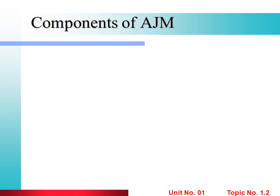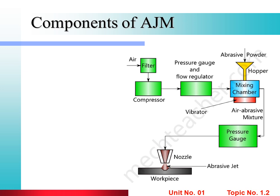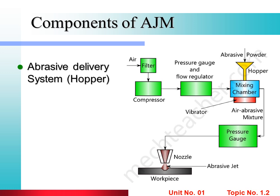Components of Abrasive Jet Machining: As shown in the figure, there are various components. The first component is the Abrasive Delivery System and Hopper. The hopper is the main component where abrasive powder and abrasive particles are stored and collected. The hopper is mounted at the top surface of the mixing chamber. The second component is the Mixing Chamber, where abrasive particles are first collected, then high-pressurized air or gas is passed in, and the gas properly mixes with the abrasive particles.